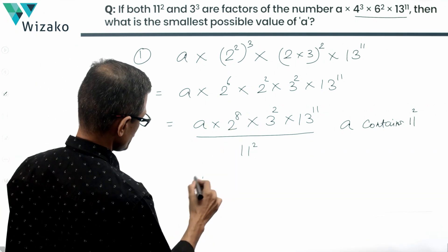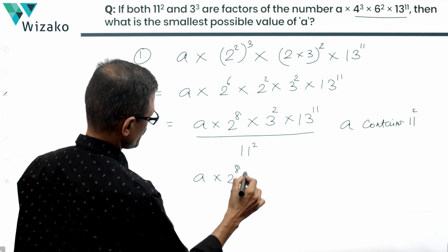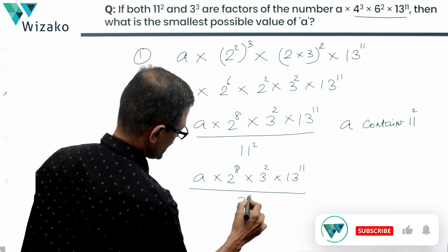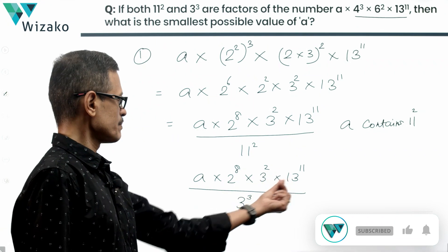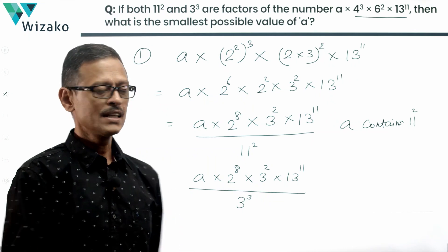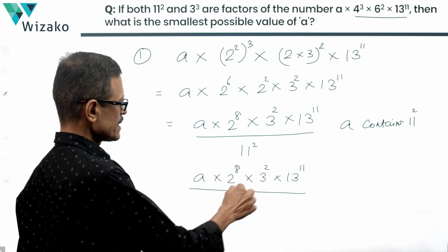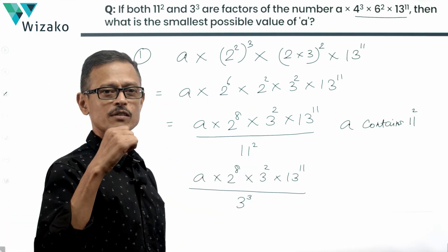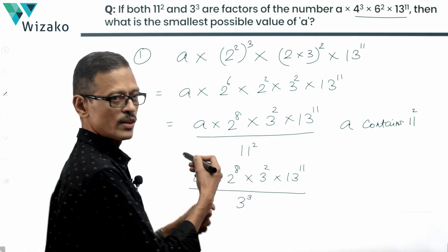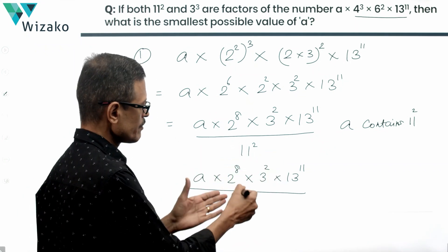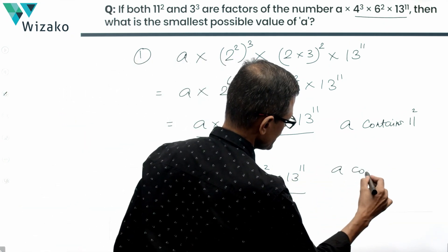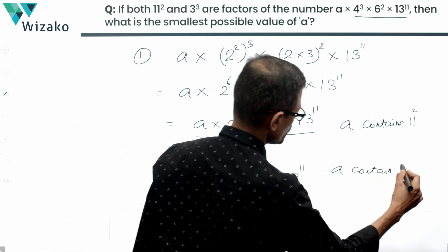We also know that this number, A times 2 raised to the power of 8 times 3 square times 13 power 11, is divisible by a 3 cube, which means that this number necessarily will have to have a 3 cube in it or more powers of 3 than 3 power 3. But what we see here, it has only a 3 square, which means that unless A contains one more 3, this number is not going to be divisible by a 3 cube. Because if A contains a 3 in it, then 3 into 3 square will become a 3 cube. So A needs to contain a 3 for this number to be divisible by 3 cube also.